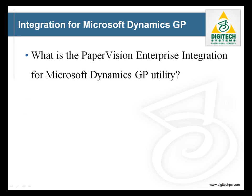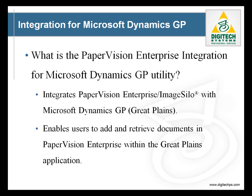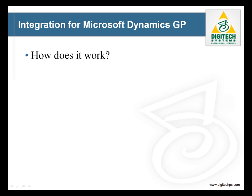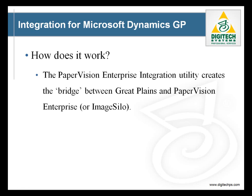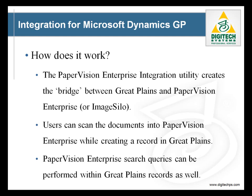This utility integrates PaperVision Enterprise or Image Silo with Microsoft Dynamics GP. It enables users to add and retrieve documents in PaperVision Enterprise within the Great Plains application. The PaperVision Enterprise integration utility creates a bridge between Great Plains and PaperVision or Image Silo. Users can then scan physical documents into PaperVision while creating the record in Great Plains. PaperVision searches can also be performed within Great Plains.